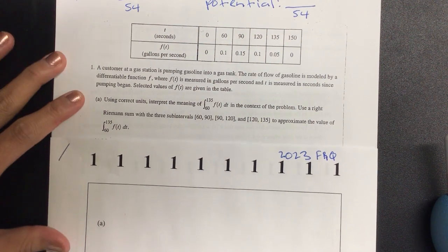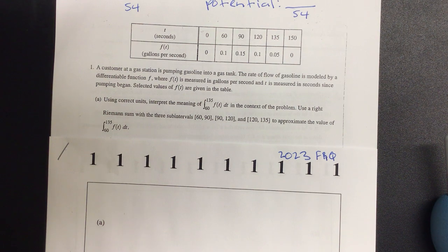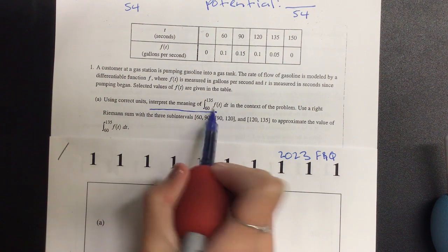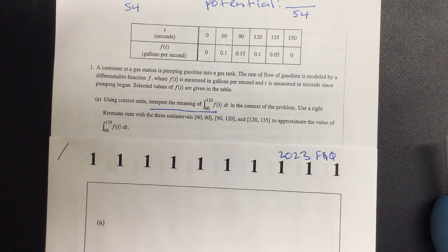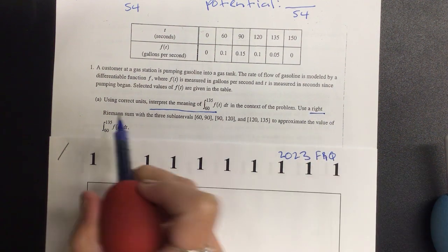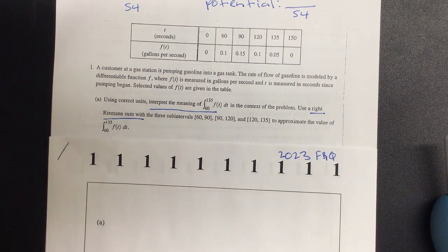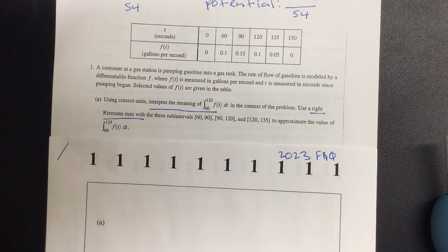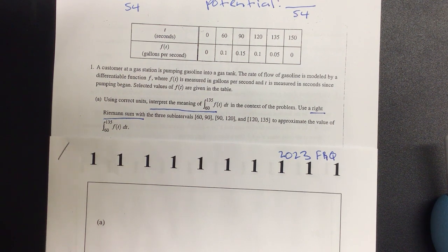Part A. Using correct units, interpret the meaning of integral 60 to 135 F of T DT in the context of the problem. Using right Riemann sums with three sub-intervals, 60 to 90, 90 to 120, and 120 to 135, to approximate the value of the integral from 60 to 135 F of T DT.